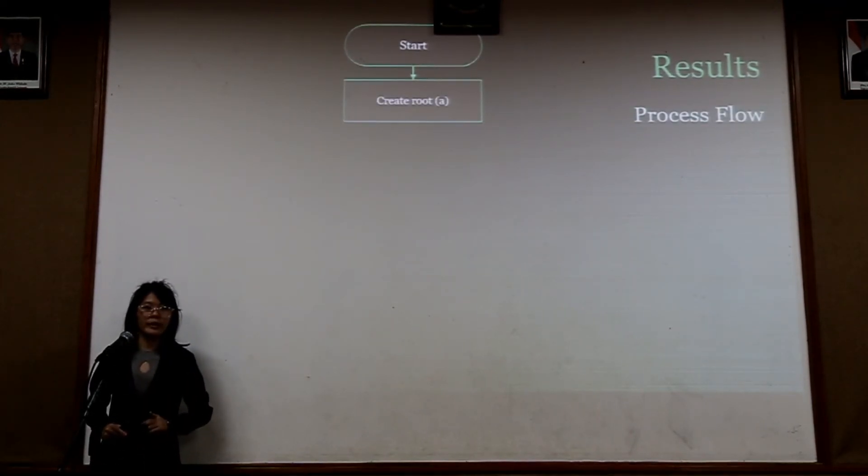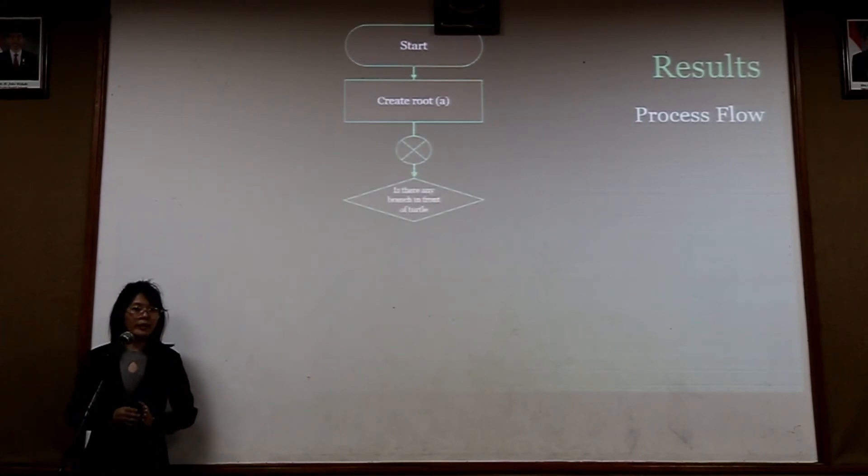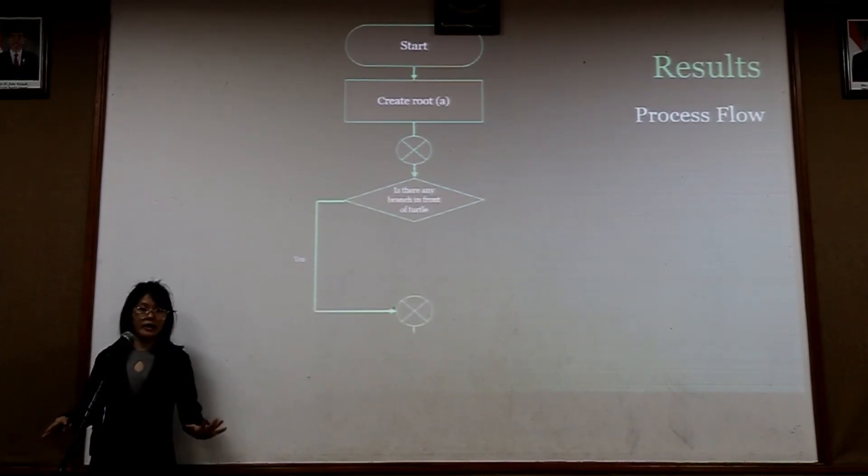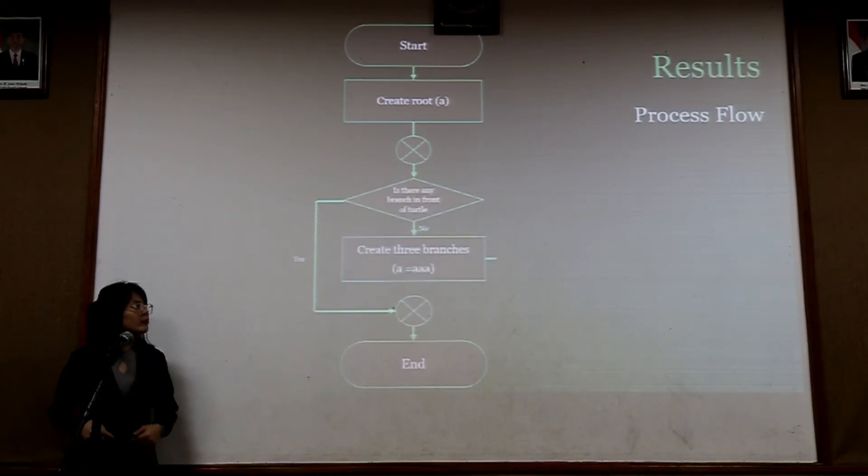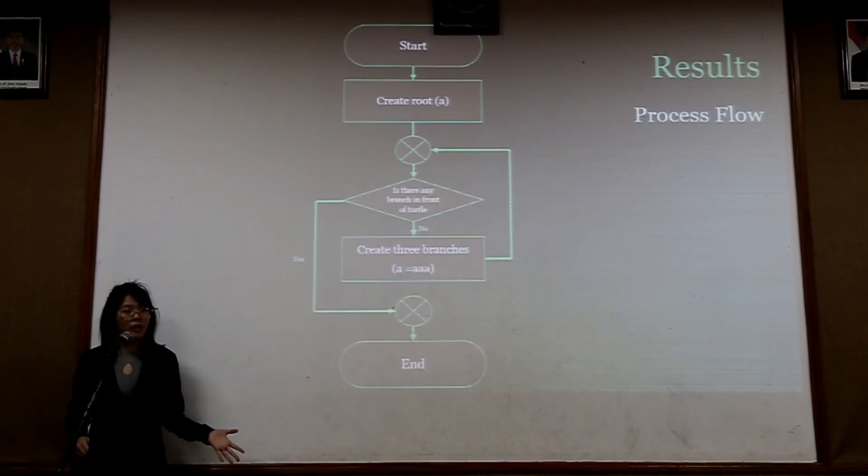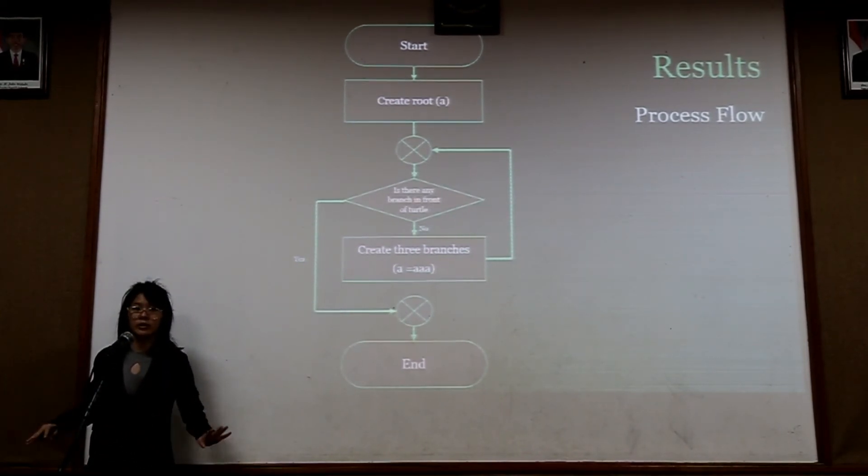First, the turtle will create a line which is called the root. And then, it will detect whether there's any branch in front or not. If there is, then the turtle will die and stop drawing the line. But if there's none, it will create three branches and then detect whether there's any branch in front or not. This process will keep on repeating until there's no turtles left.